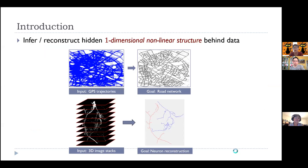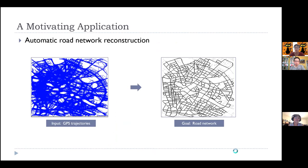Let's start with the problem: inferring a hidden one-dimensional nonlinear structure behind data — essentially a graph skeleton. A graph skeleton is nonlinear, locally one-dimensional, but can have singularities at junction nodes. For example, given a collection of GPS traces sampled by your cell phone recording trajectories, this collection samples a hidden graph structure — the road network behind it. The question is: given only GPS traces, can we automatically recover the road network?